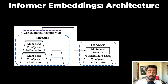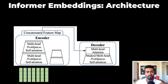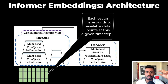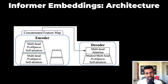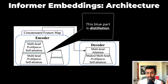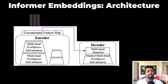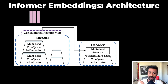This is the informer architecture. To the input, we're going to pass some time series vectors. Each vector corresponds to available data points at that given time step. This information is passed into the encoder, and through this encoder they undergo some prob sparse attention and distillation. And in the output we get some output encoded vectors.